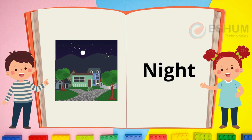Night. In the picture it is dark and there is a moon in the sky. It is night. Lights are off in the houses. I think people in the town are sleeping. What do you do at night before you go to bed?